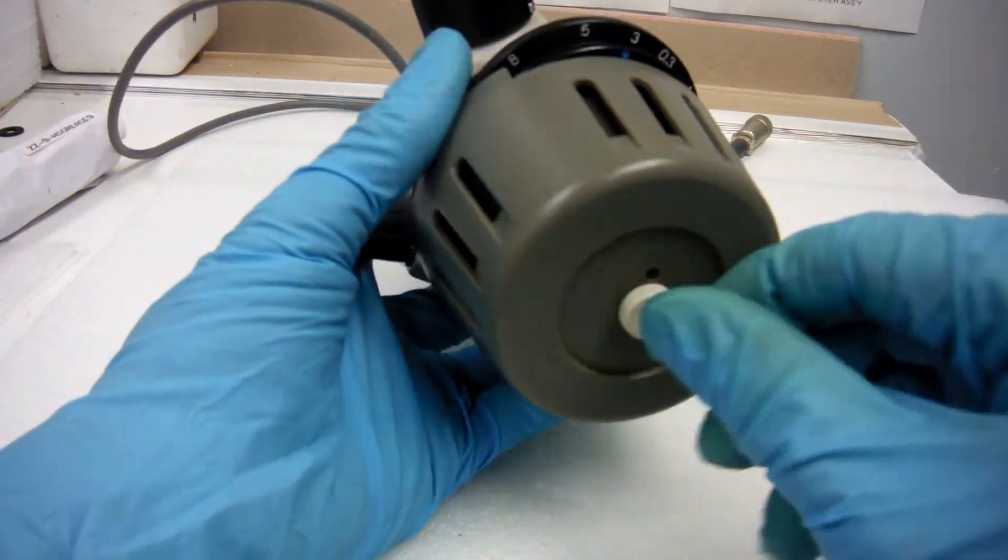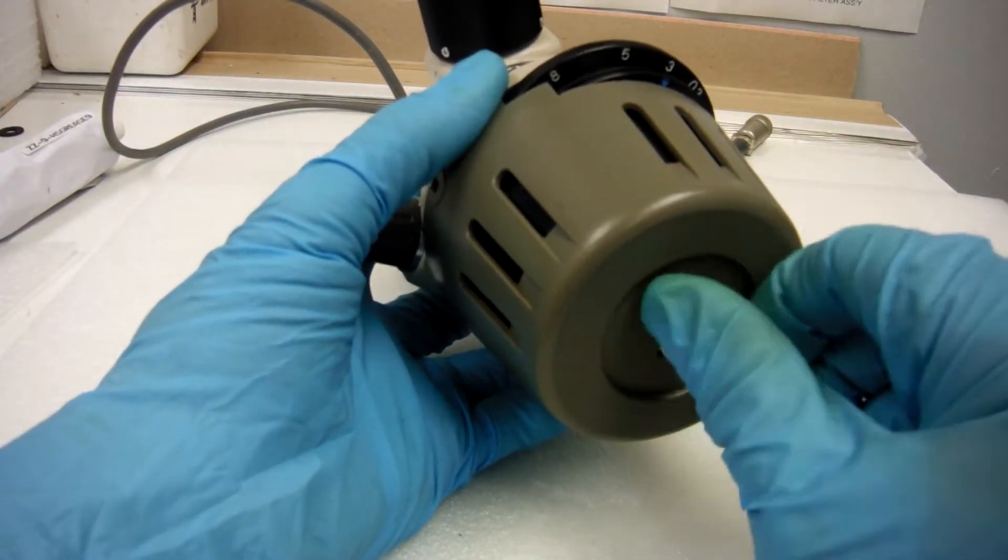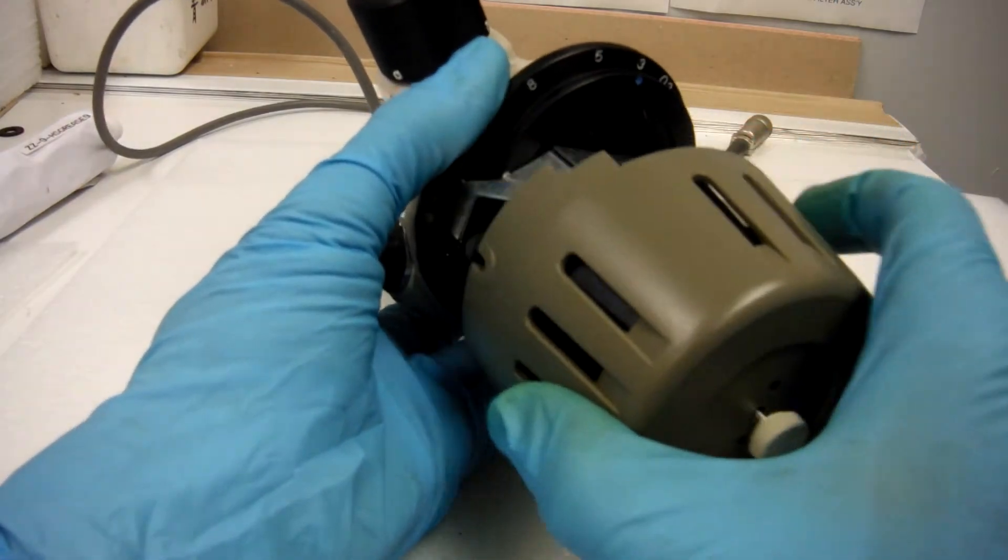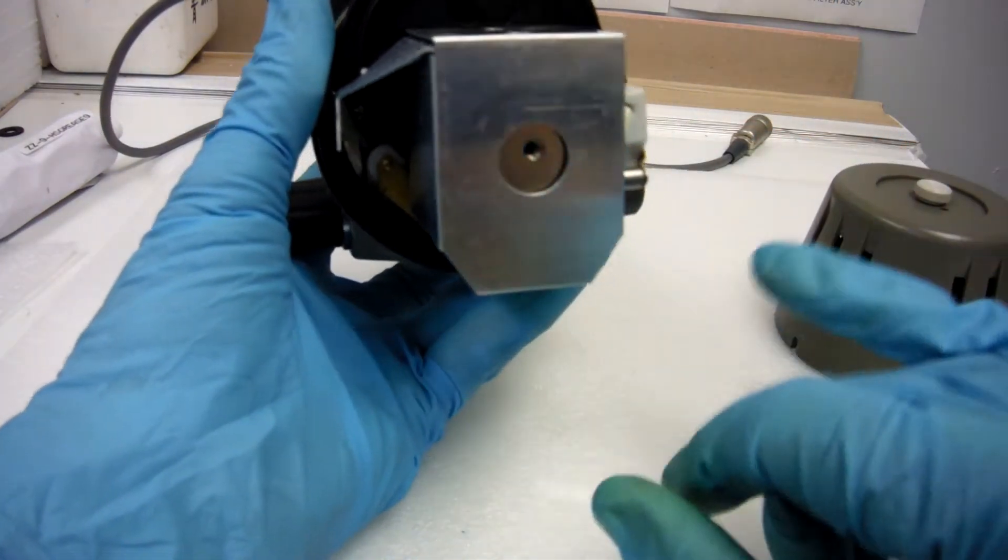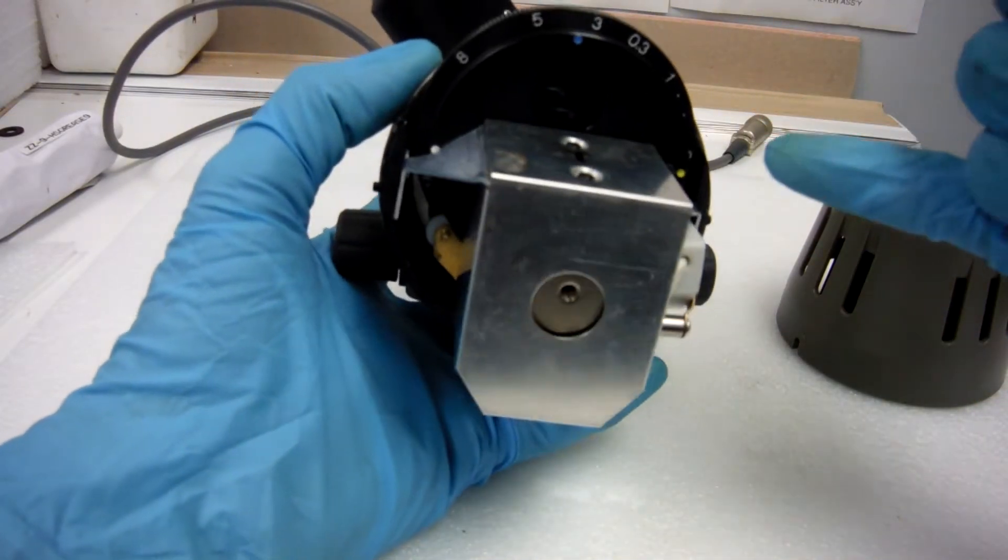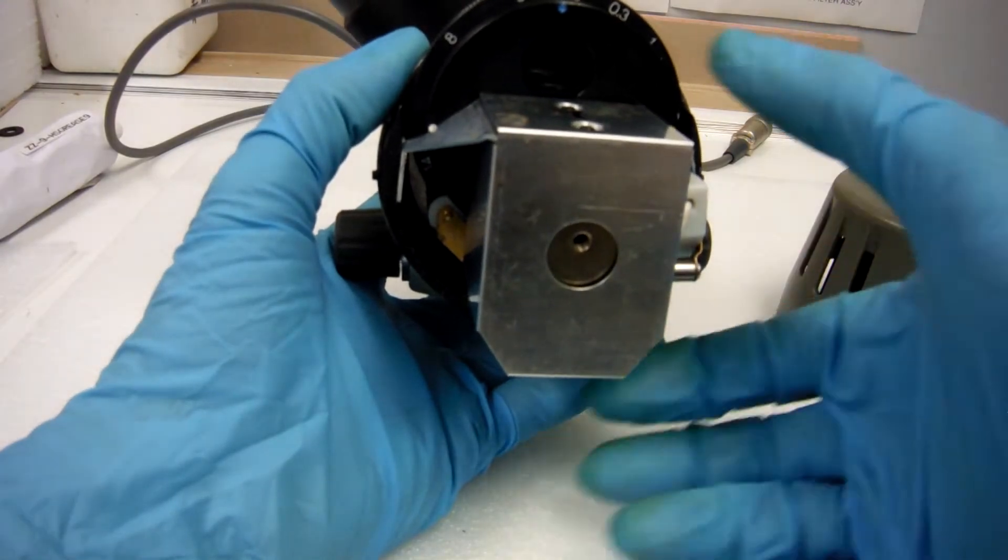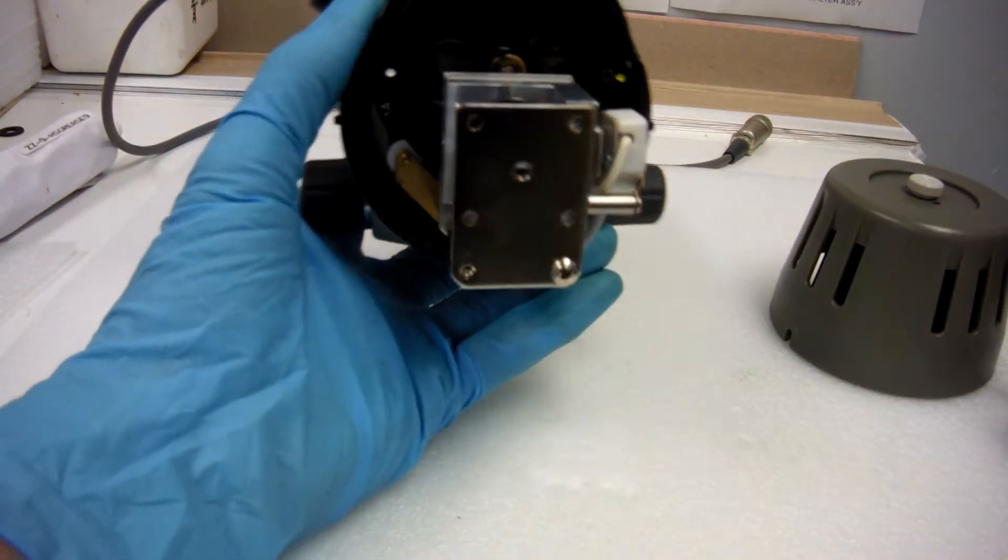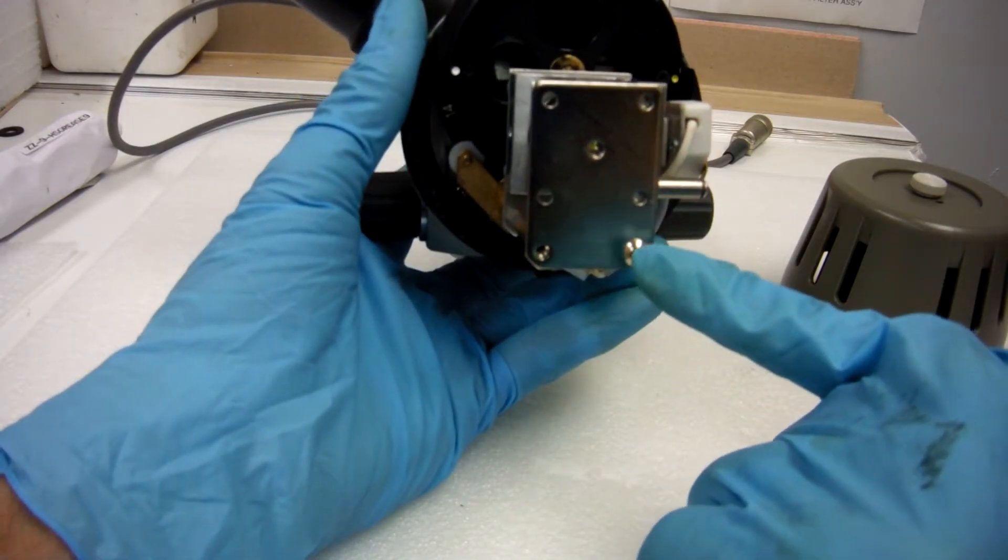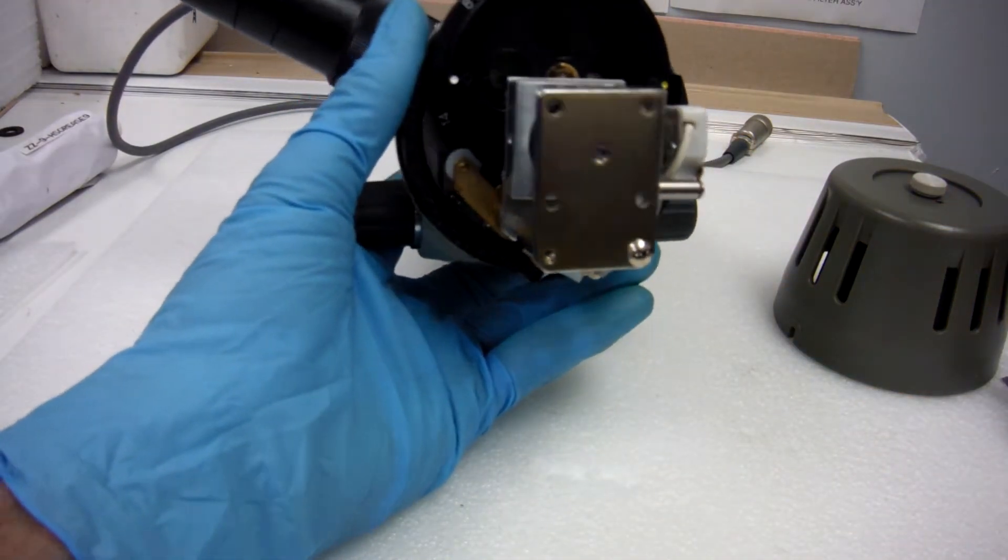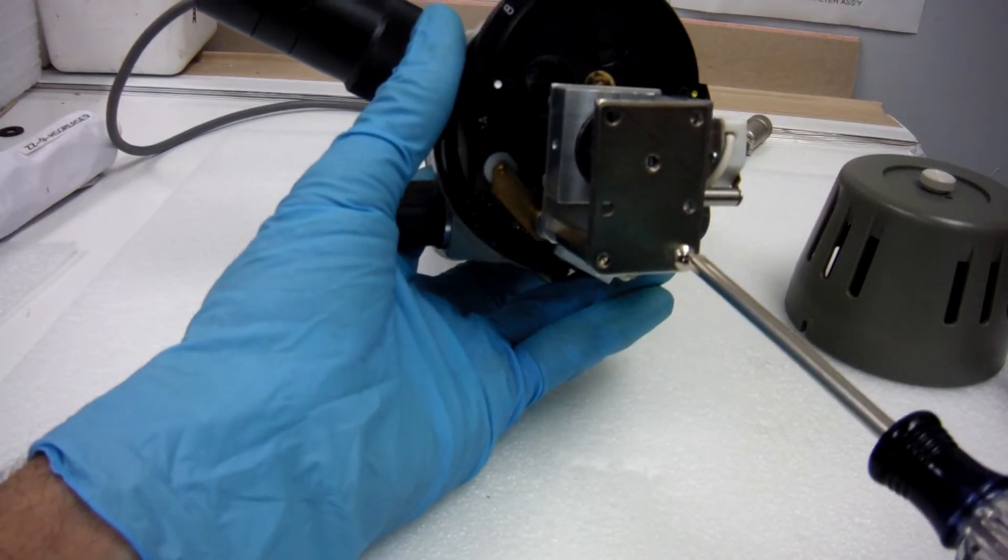Now we're going to go in deeper and take off the cover. Two screws that hold on your heat shield. Take those off. You have two screws holding this plate. Take those off.